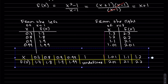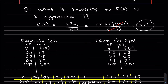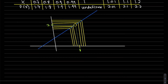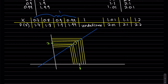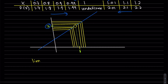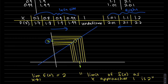If we wanted to graph it, there's a hole at x = 1 and the graph is a line. Looking at values to the left of 1 and to the right of 1, they all seem to be getting closer and closer to 2. Therefore, the limit as x approaches 1 of f(x) is equal to 2. The values approach 2 from the left and 2 from the right.